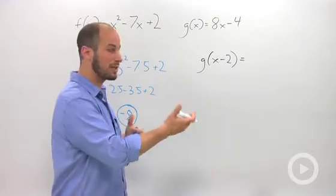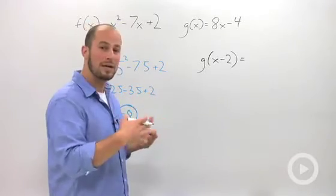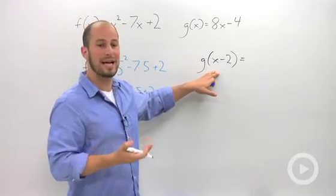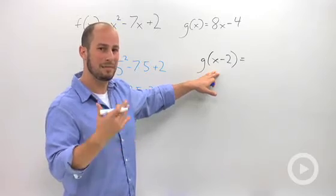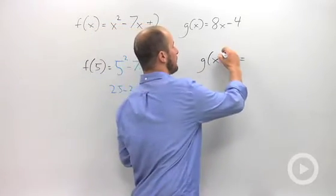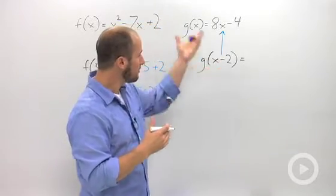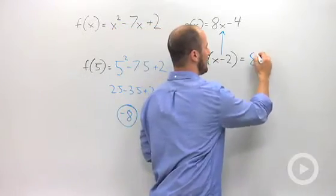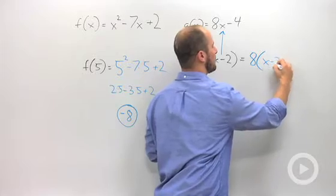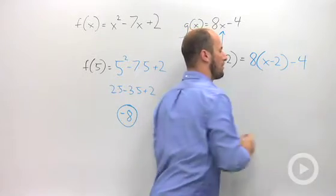Wherever we saw x, we plugged in, what was it, 5. Now we're going to plug in x minus 2. Same exact idea, but a little twist just because we have something else. Plugging in x minus 2, we end up with 8. And then our x just becomes x minus 2 minus 4.